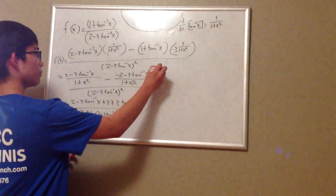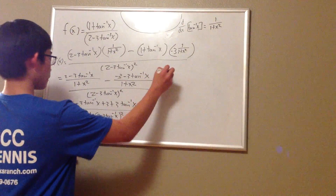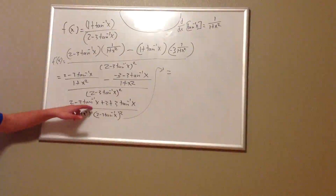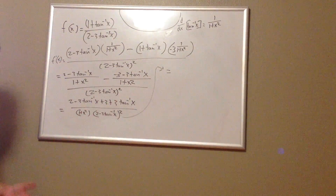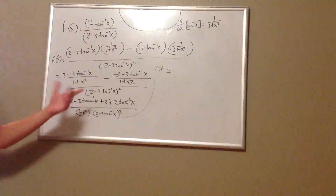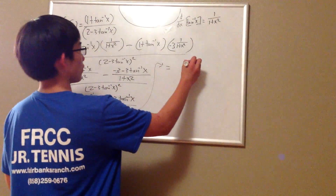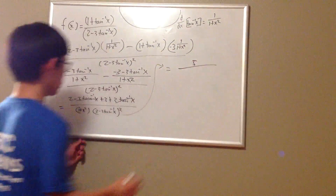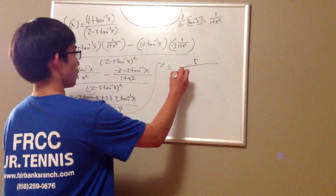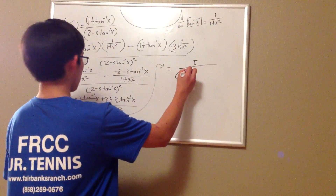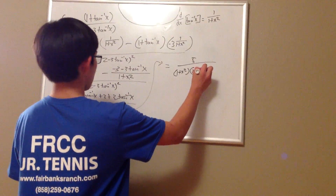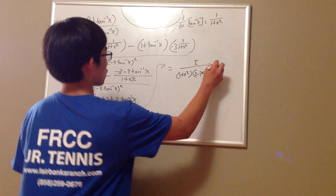From here, we realize that negative 3 arctangent x and 3 arctangent x cancel each other out, and you end up with 2 plus 3, which is 5. So we have a nice constant in the numerator and no need to simplify further. The final answer is 5 over the quantity 1 plus x squared times the quantity 2 minus 3 arctangent x, squared.